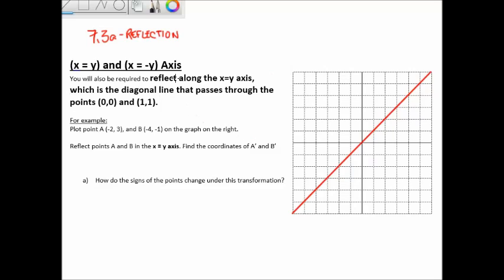We have point A at negative 2, 3 — let's plot that here. And point B at negative 4, negative 1 — let's put point B there. Let's review the rules of reflection: the angle the object makes with the mirror must be 90 degrees, and the distance from the object to the mirror equals the distance from the mirror to the image.